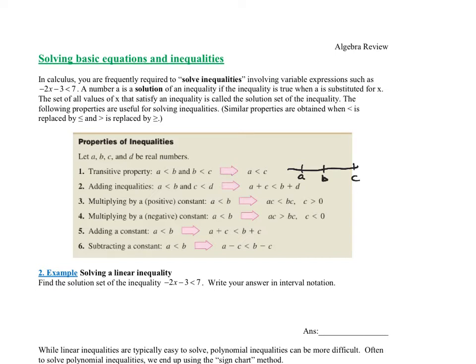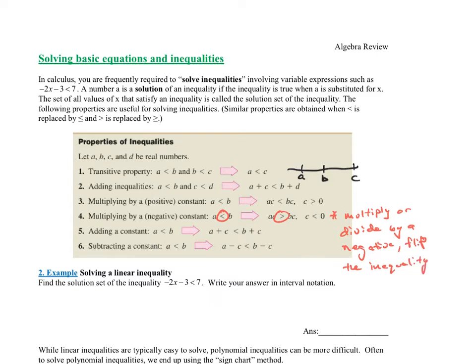Multiplying by a positive constant: if A is less than B, then AC is less than BC. Multiplying by a negative constant: if A is less than B, then AC is greater than BC. This is really important — if you multiply or divide by a negative, you must flip the sign of the inequality. Before it was A is less than B, but after multiplying by a negative number, it flipped from less than to greater than. Anytime you multiply or divide by a negative, flip the inequality. That's the most important thing to remember.